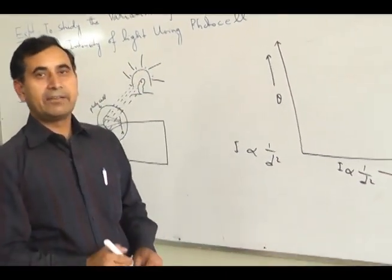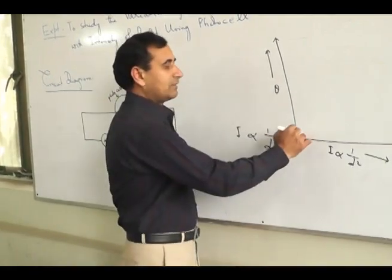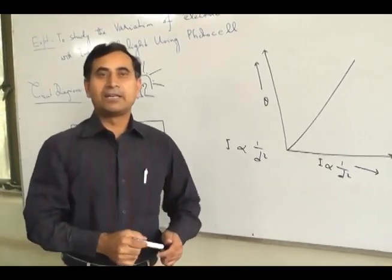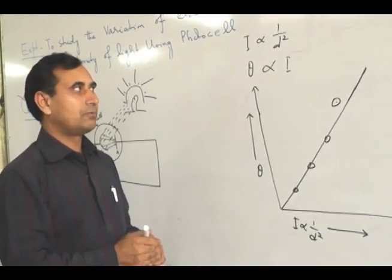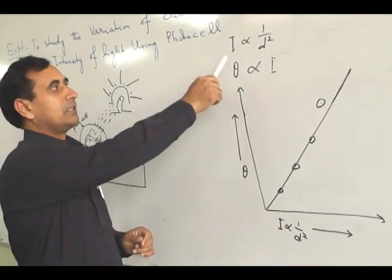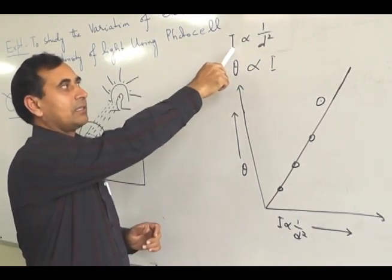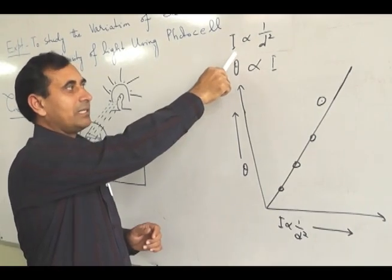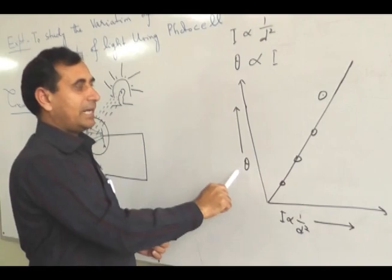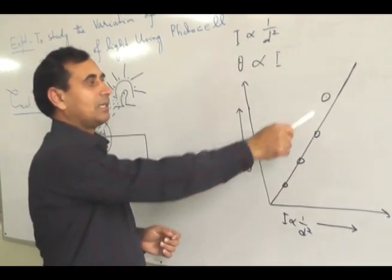Since current and electric intensity are directly proportional to each other, the graph will be a straight line. This will be the graph between electric intensity and electric current. We will take light intensity along the x-axis and current along the y-axis. Since they are directly proportional to each other, the graph will be a straight line.